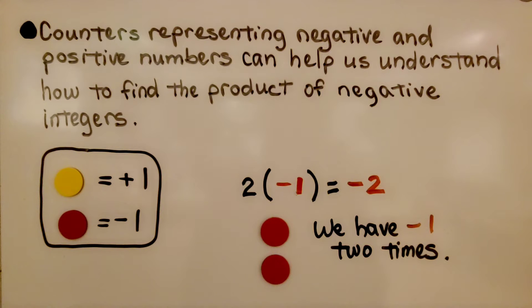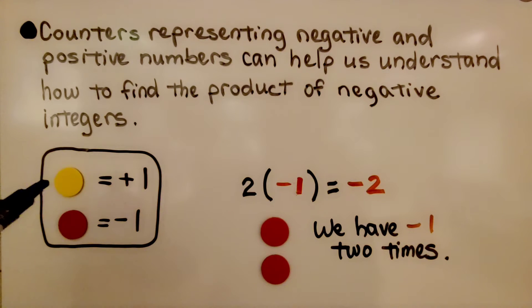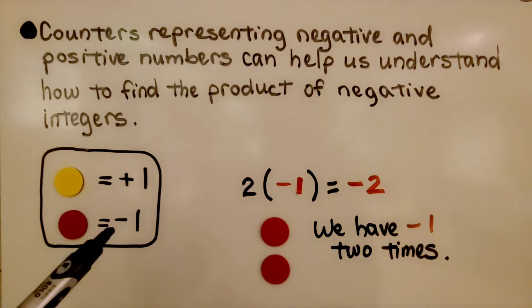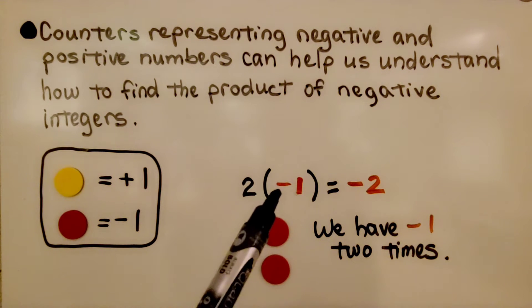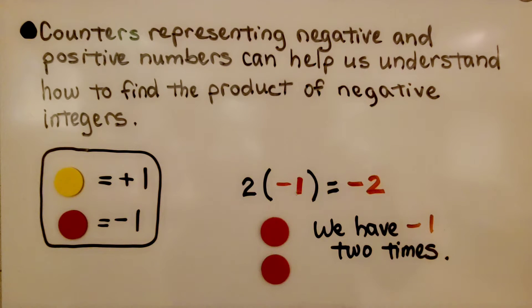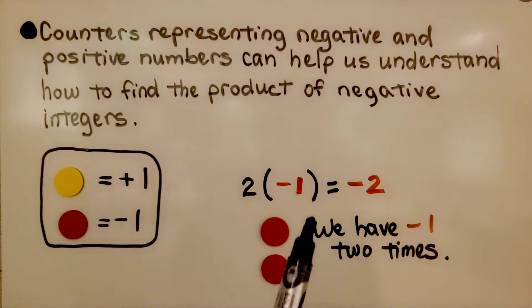Counters representing negative and positive numbers can help us understand how to find the product of negative integers. We have a yellow counter for positive 1 and a red counter for negative 1. If we have 2 times negative 1, we have 2 negative counters — negative 1, 2 times — and it is equal to negative 2.